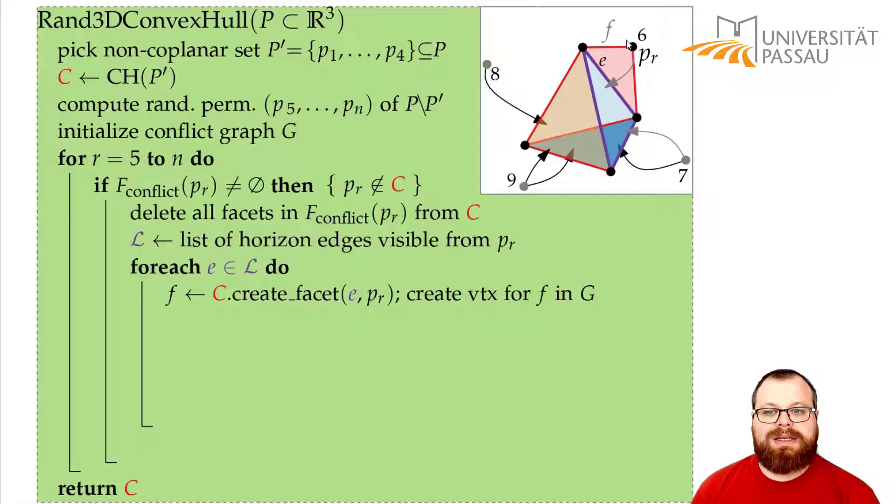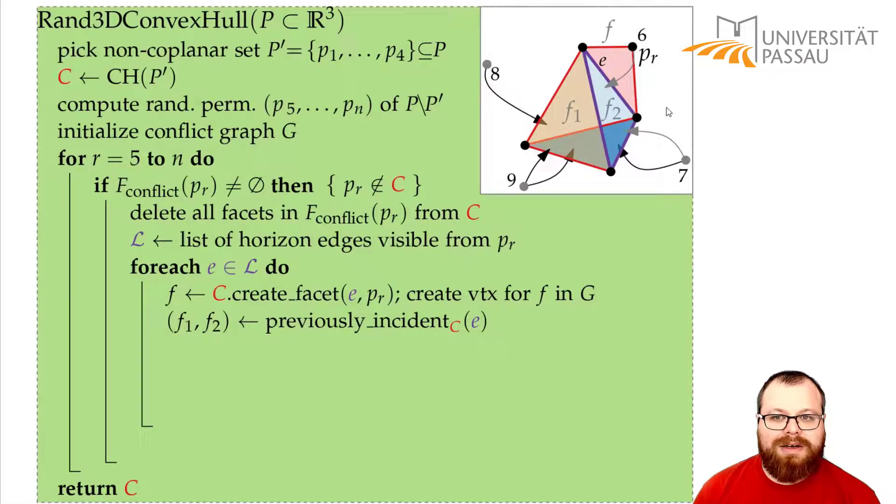Now we have a new face in the convex hull and we have to update the conflict. So we have to figure out what are the new conflicts of this face. For that, look at the edge E again. There were two faces before adjacent to E, which was the one at the back F1 and the one that we just deleted F2. One of them is always one that we deleted and the other one is one that is still there.